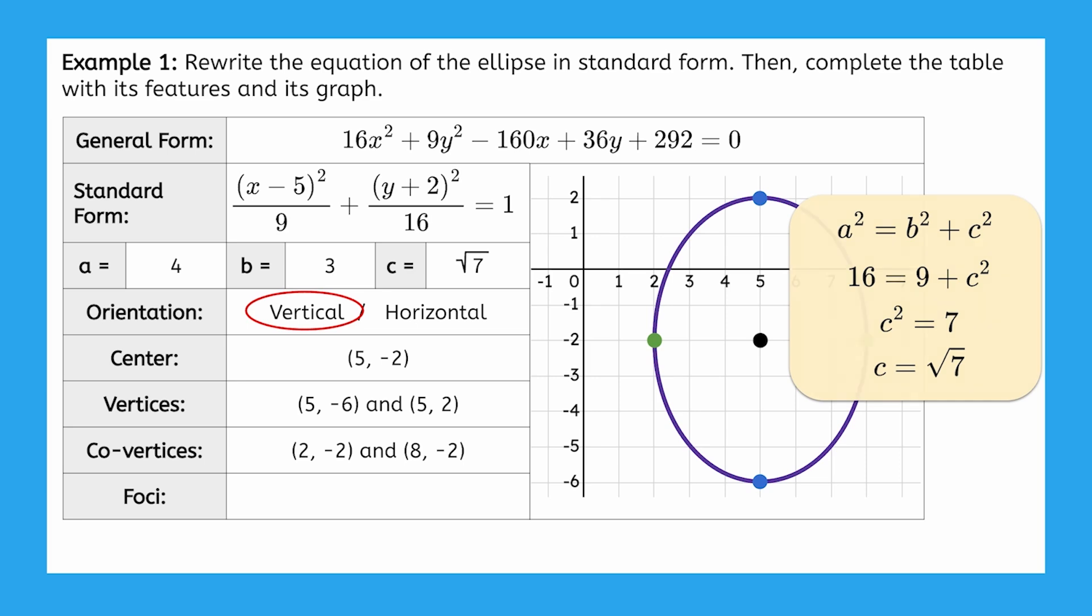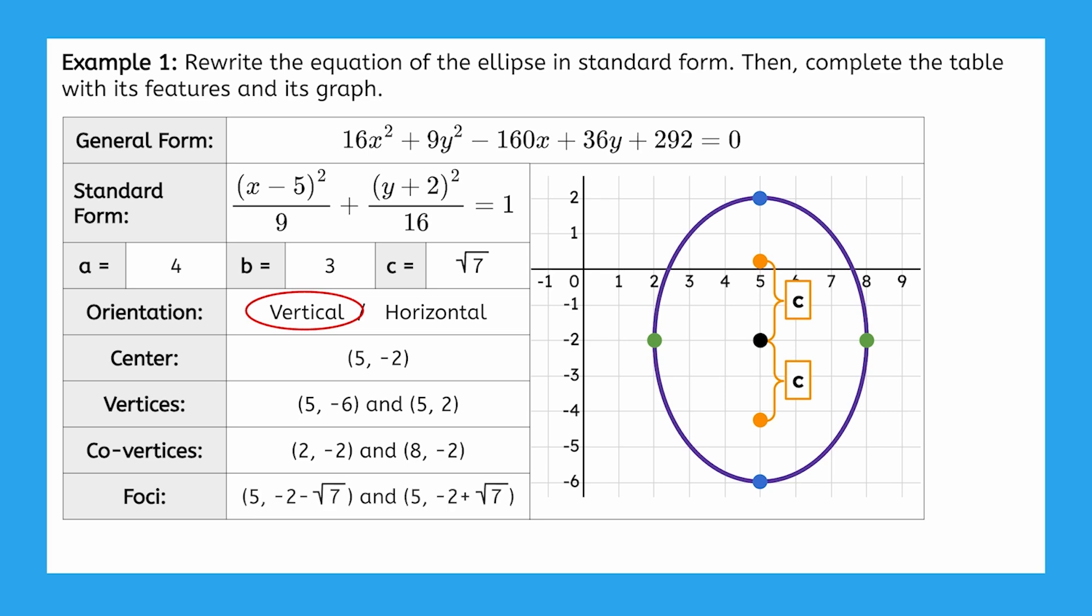We can approximate this number to around 2.6 to locate the foci accurately on the graph, but let's write our foci in exact radical form: 5, negative 2 minus square root of 7 and 5, negative 2 plus square root of 7.